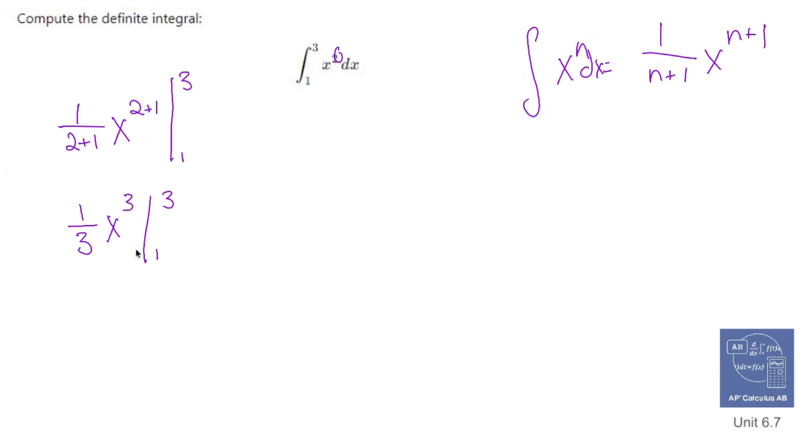Now, since I have these limits of integration, we have to do the whole subtraction thingy that integrals do. So what you do is you write out what you got, 1 third, but instead of saying x cubed, you plug in your upper limit. So 1 third, 3 cubed, close my bracket, minus 1 third, 1 cubed, close the bracket.